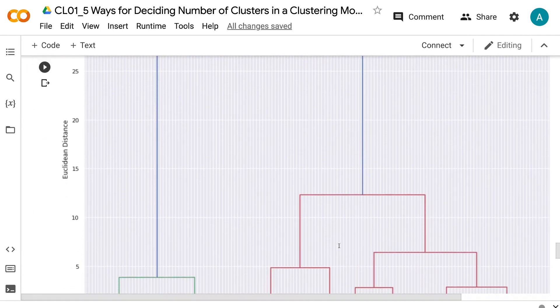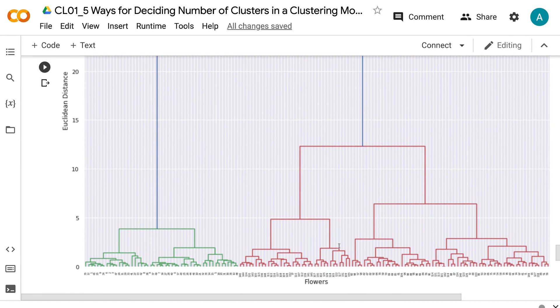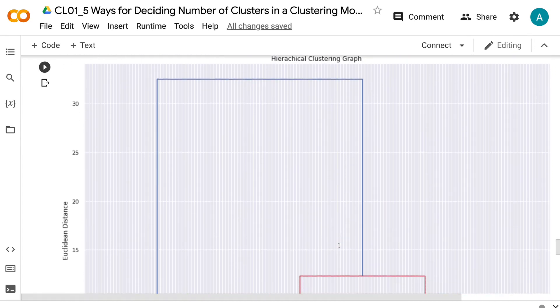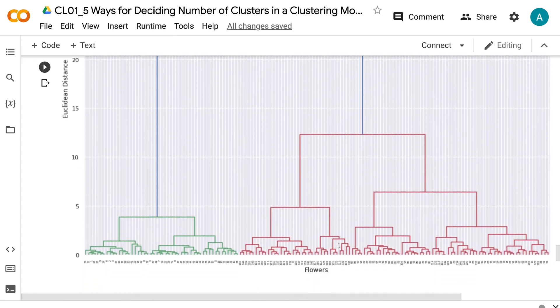From the graph, we can see that the two clusters connected by the blue line have the largest distance. And the two sub-clusters in red have a relatively large distance too. Therefore, the hierarchical graph suggests two or three clusters as well.